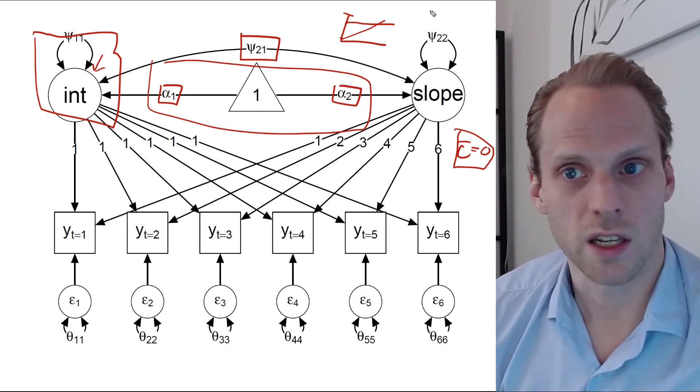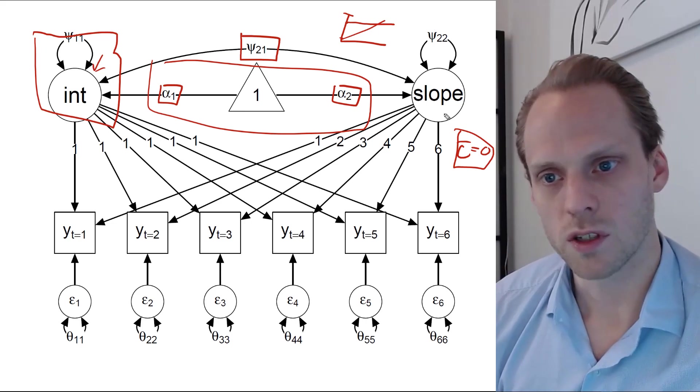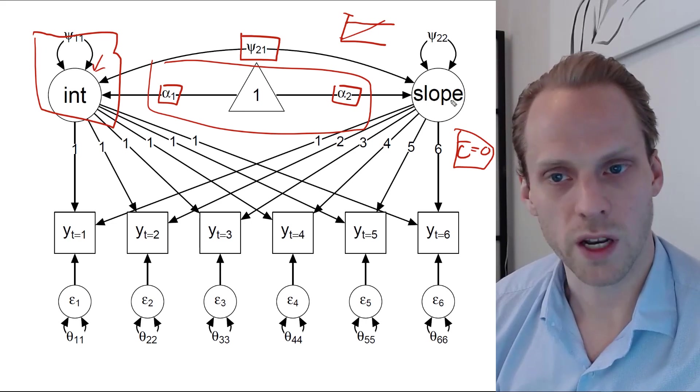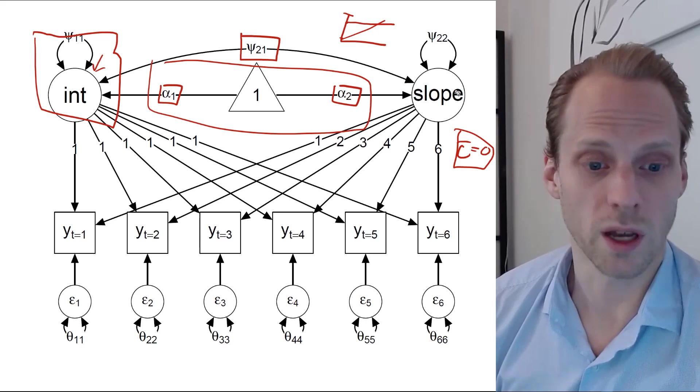So then we can see, let's say, if you have anxiety and depression, for example, or anything you want to measure, we could see if people that have a stronger rate of change in one also have a stronger rate of change in the other, and that can be very useful information to have.